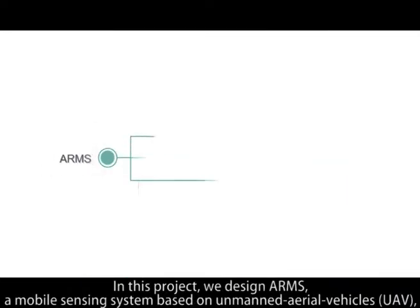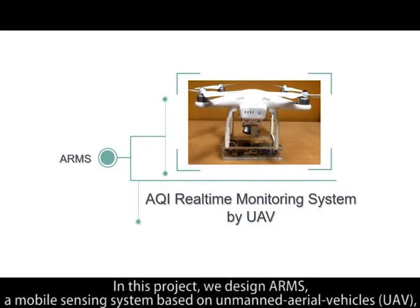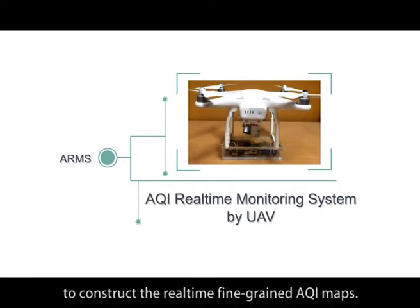In this project, we design ARMS, a mobile sensing system based on an unmanned aerial vehicle to construct real-time fine-grained AQI maps.